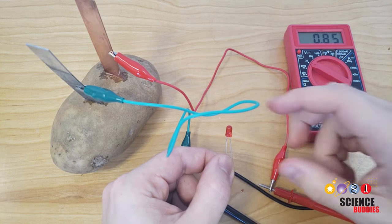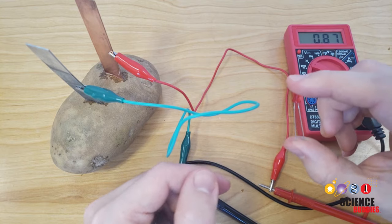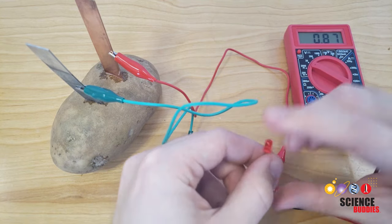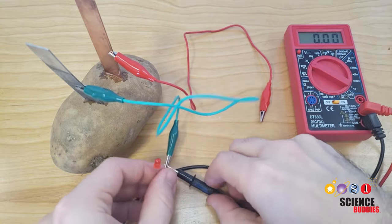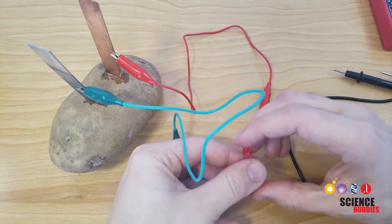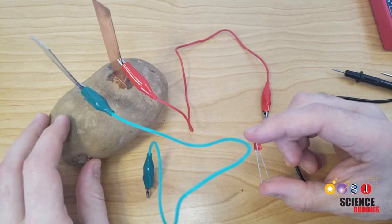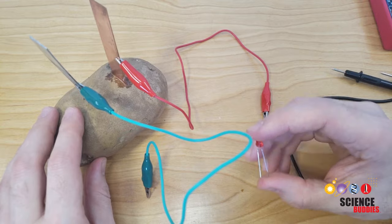So just taking readings with the multimeter is not exciting. We want to see if our battery can power something like the LED. So to do that, we are going to disconnect the multimeter but leave the alligator clips attached to the electrodes. And here is where we need to pay close attention to the polarity, or which side is positive and which side is negative, of both our battery and our LED.